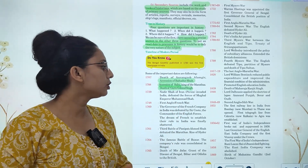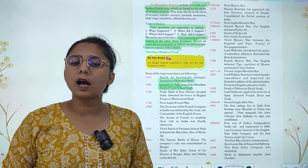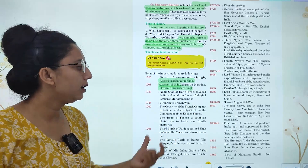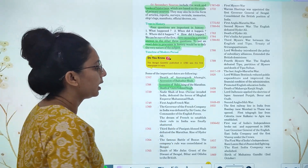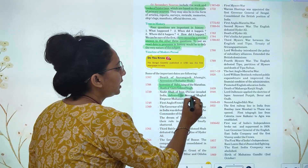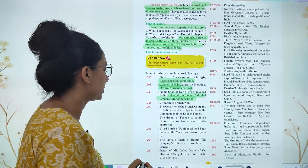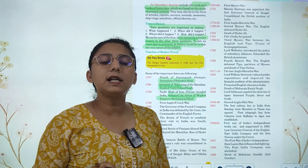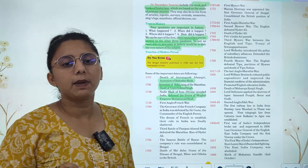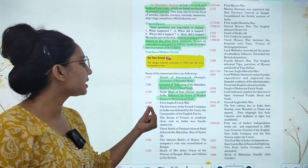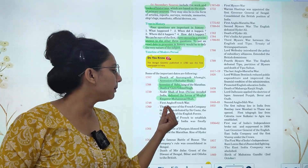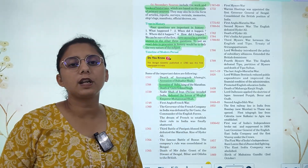Nadir Shah of Iran invaded India and defeated the forces of the Mughal emperor. In 1748, there was the first Anglo-French war.